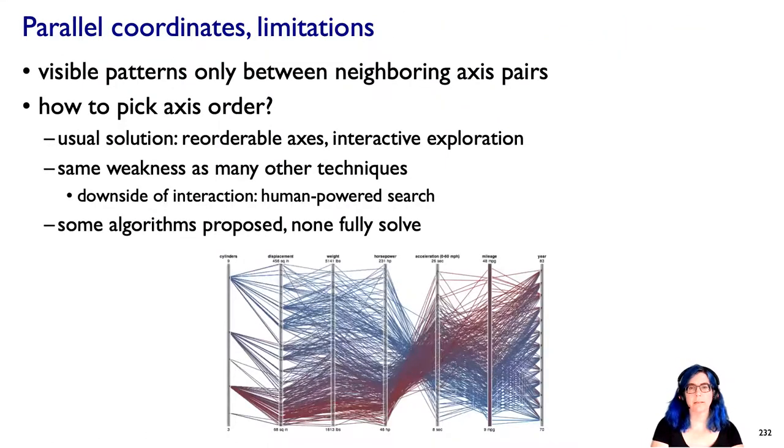The axis ordering is tricky because it's only the neighboring axis pairs that really shed a lot of light on that. You can sometimes say you could reorder the axes interactively, let people just hunt around. In the worst case, though, that actually degenerates into human-powered search, where you would have to just systematically go through each and try to remember it. Certainly you could try to approach this algorithmically. There have been algorithms proposed that sort of partially address this. But fundamentally, this comes down to both the strength and the weakness is that you're showing much more at once, but you've got this real asymmetry between the pairs that are close to each other, and then the pairs that are further away.